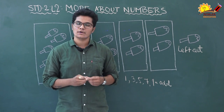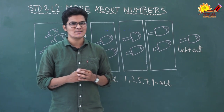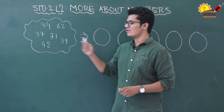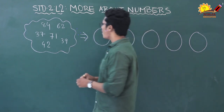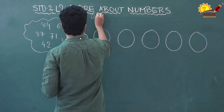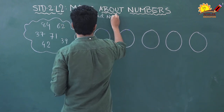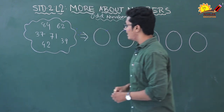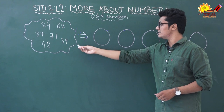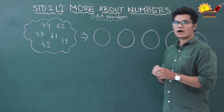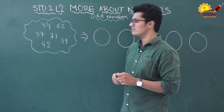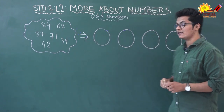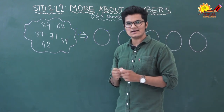So the numbers that we cannot write in pairs — where one is left out — those are odd numbers. Now let's see some examples. Children, you can see some numbers on the board. Let's write the odd numbers from these numbers in the circles. How do we identify odd numbers?